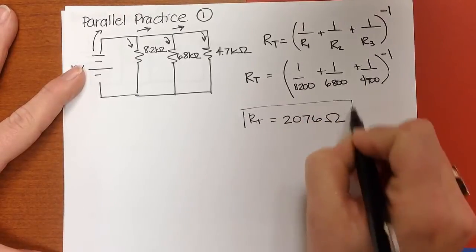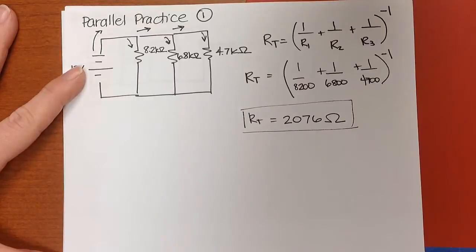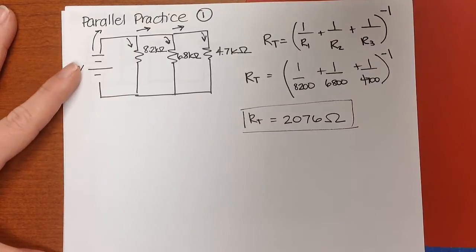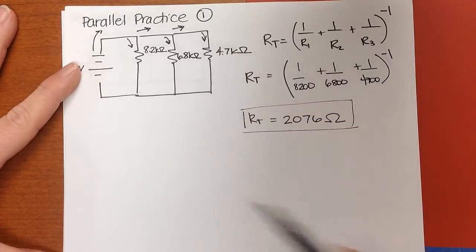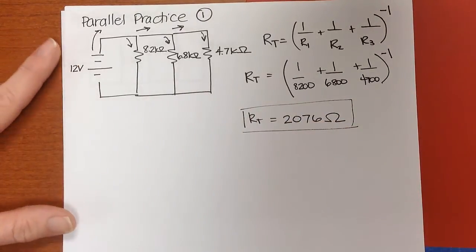So I'm going to kind of box that out so I can find it later when I'm looking for it. And that number you'll notice is smaller than the resistance of any one of those components. That's what we expect in a parallel circuit.